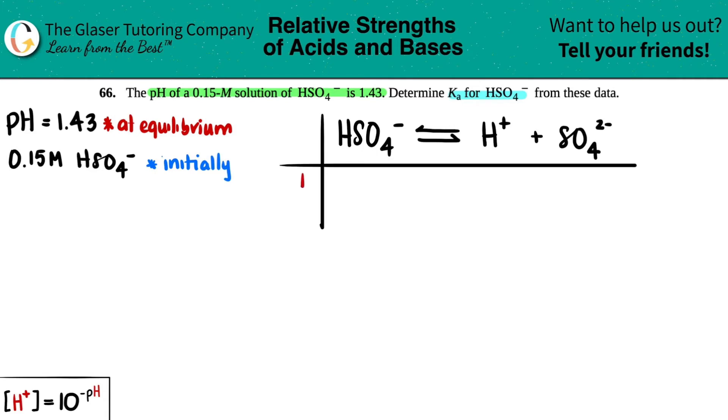Since this is an acid, I will do everything in red. Any time you have charged species, those are always aqueous. Aqueous guys are allowed in your Ka expression. We said initially that we started off with HSO4- of a 0.15 molar solution. They did not state that I started with any H+ or sulfate ion, so 0 and 0. I didn't start off with any of that.